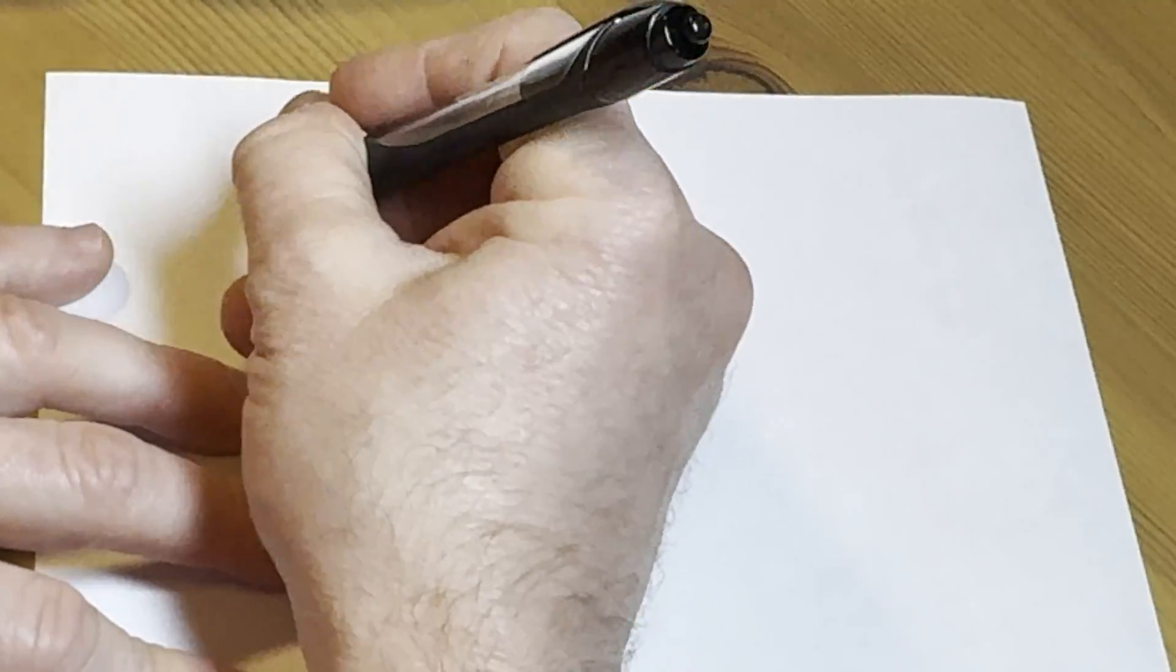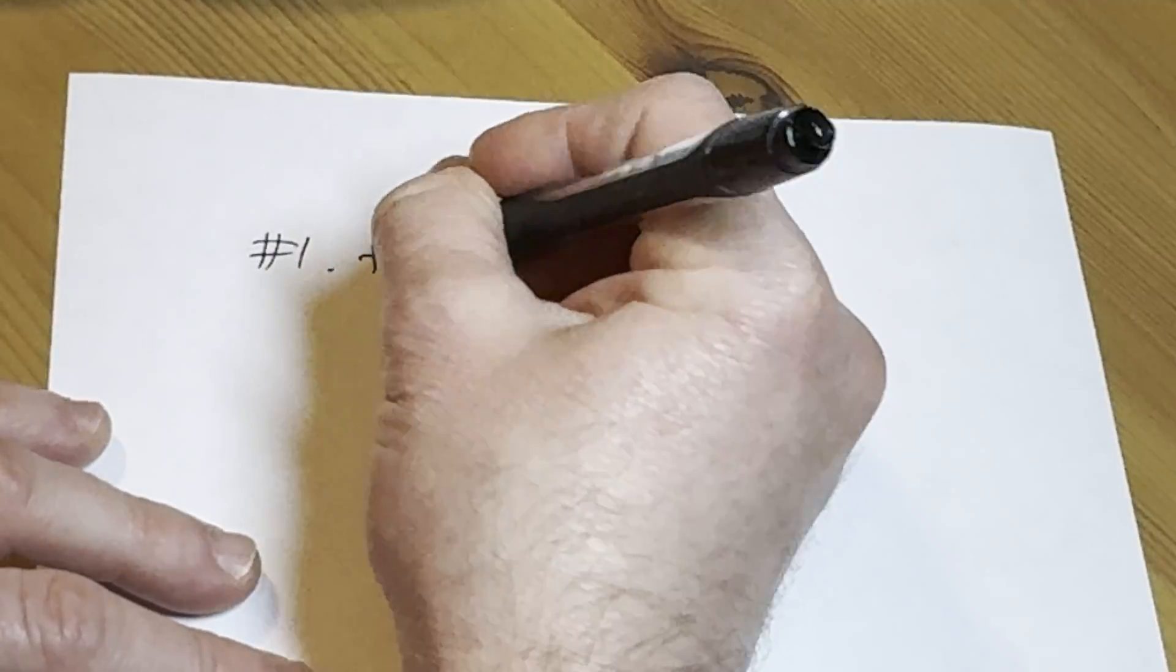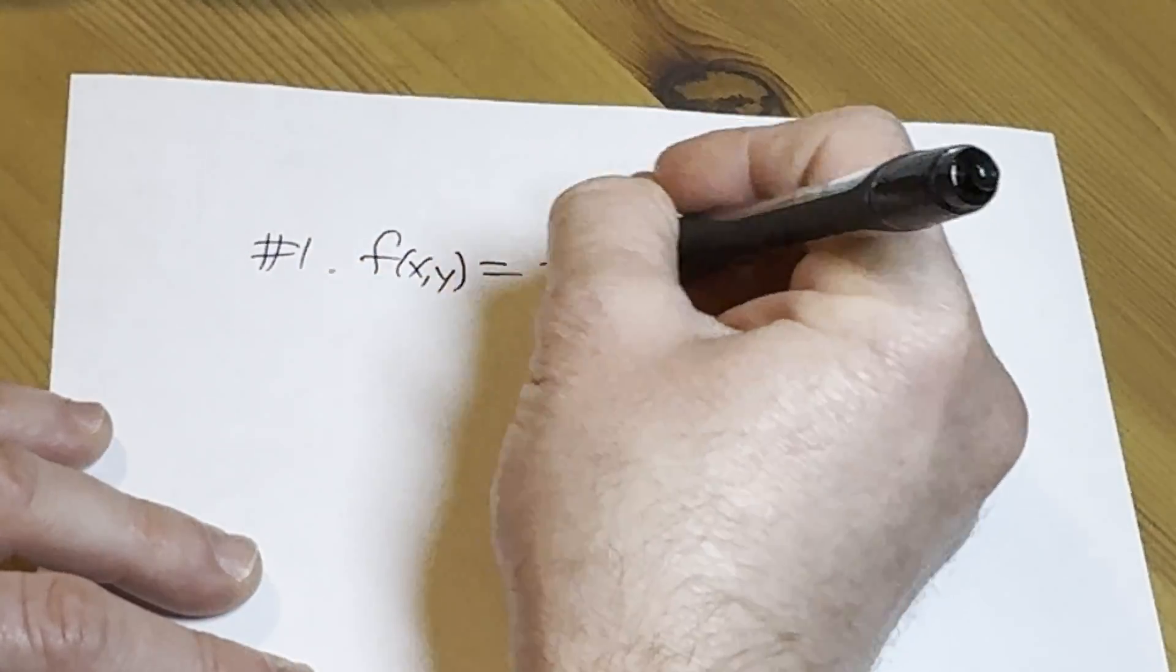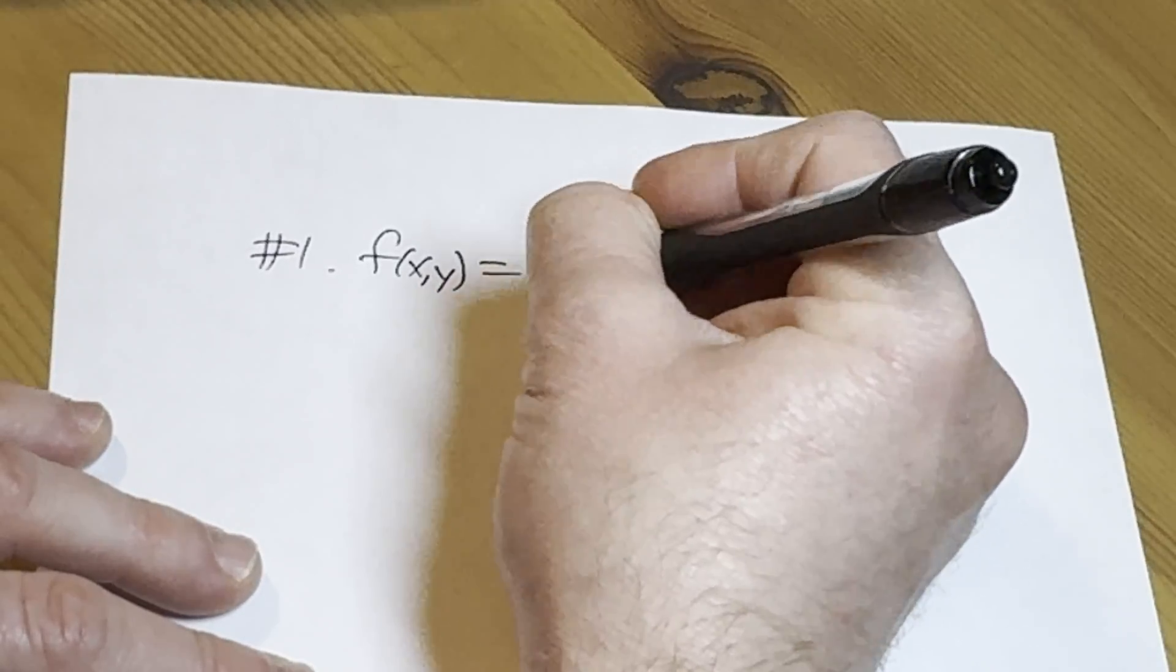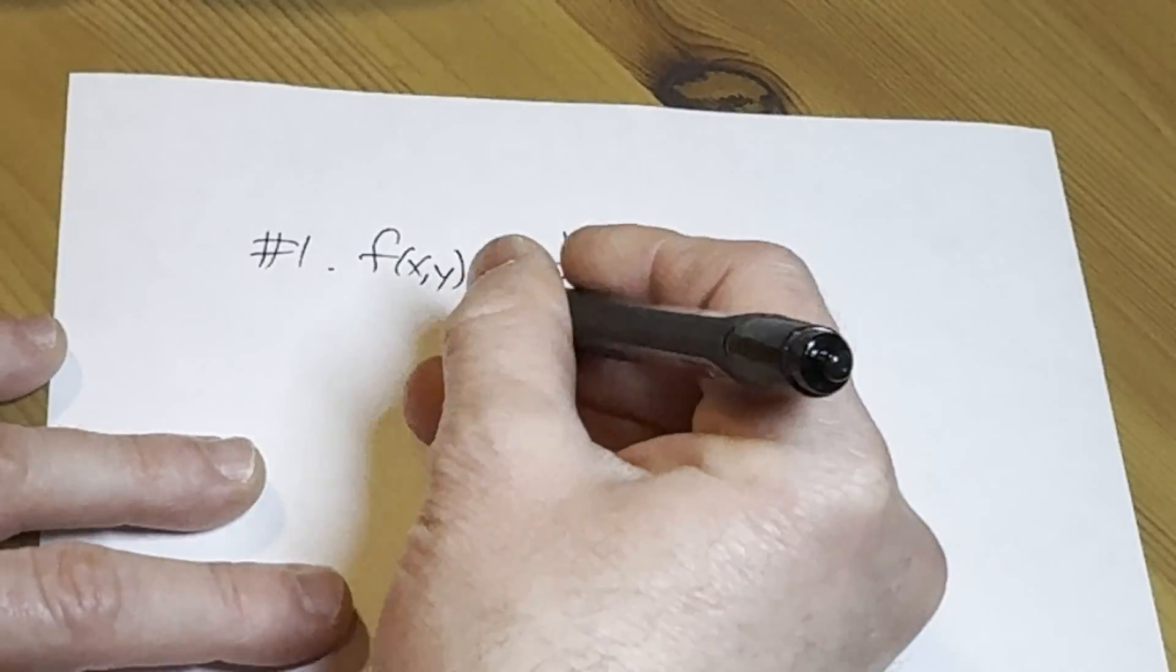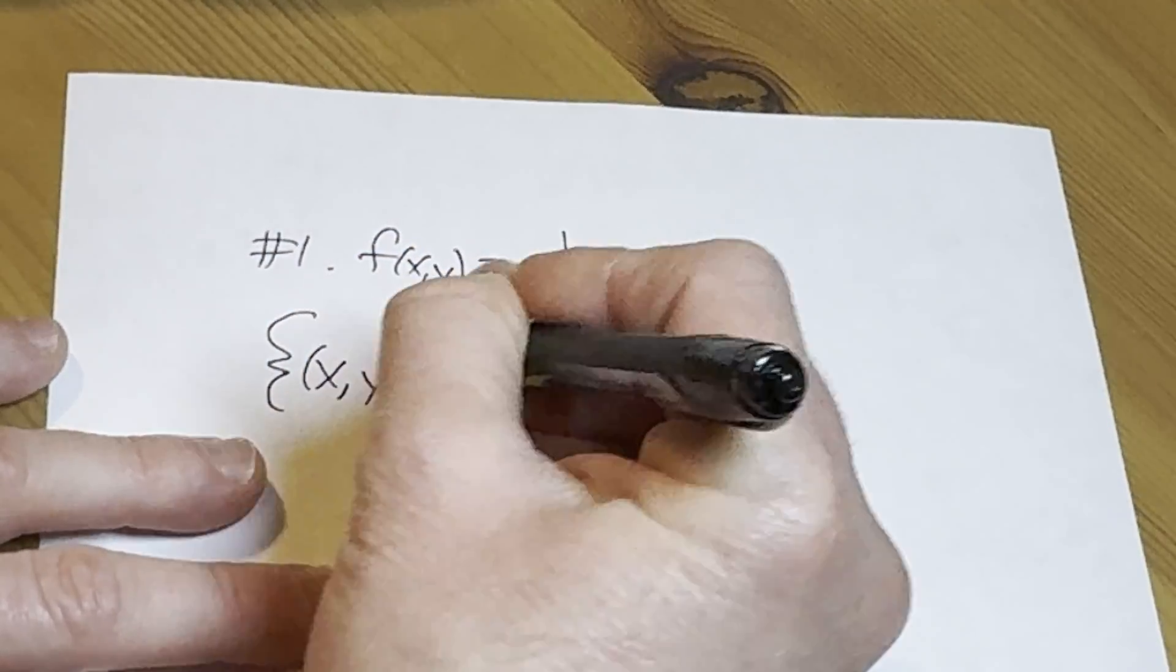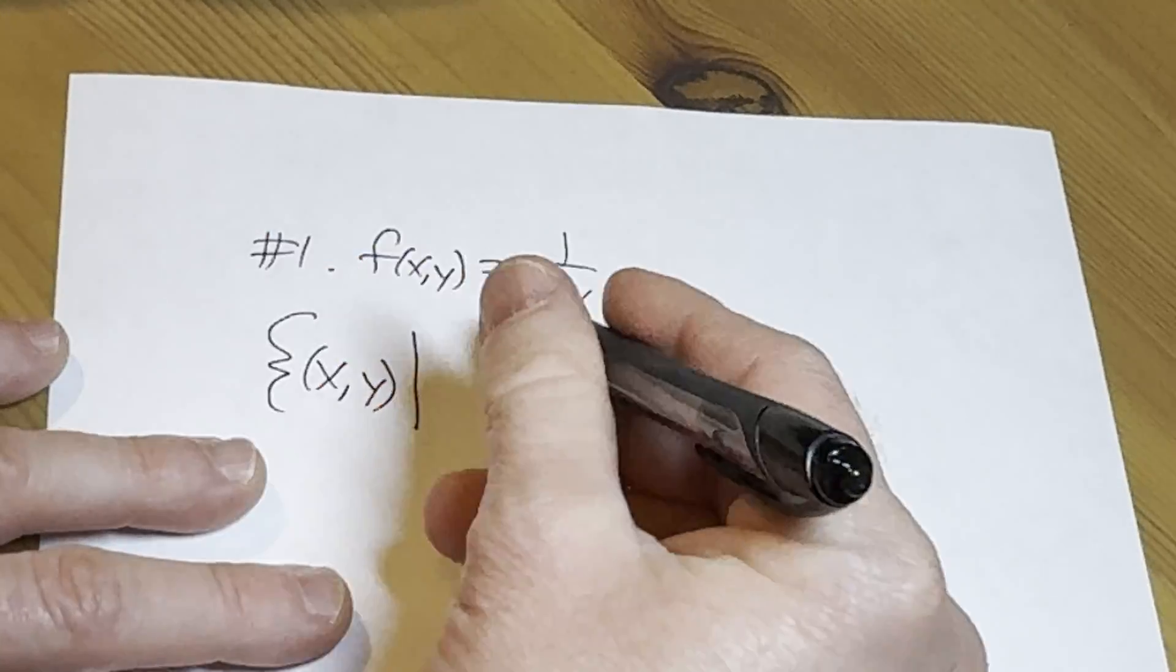So for example, we might need, let's do number one. We should be able to figure this out. We have f of x, y equals one over xy. And we have to find the domain of this function. So the domain is the set of inputs. It's a set of ordered pairs. So it's going to be the set of all ordered pairs, x comma y, such that.